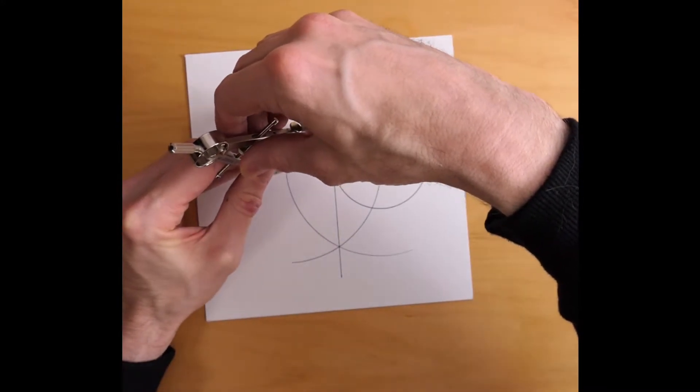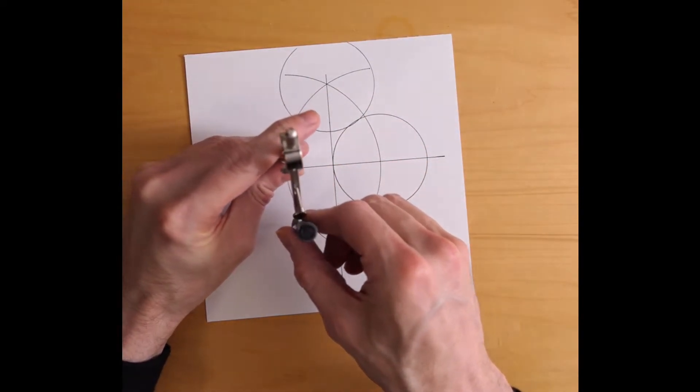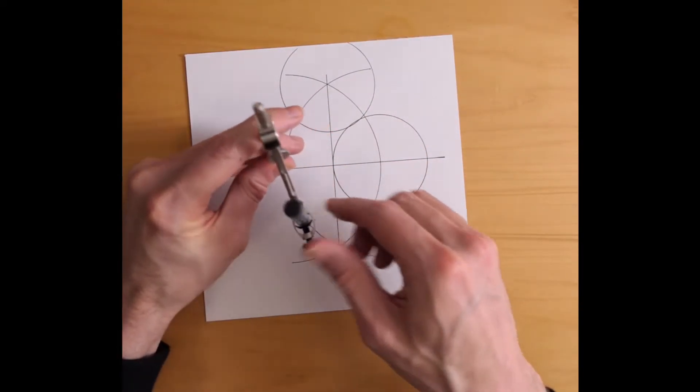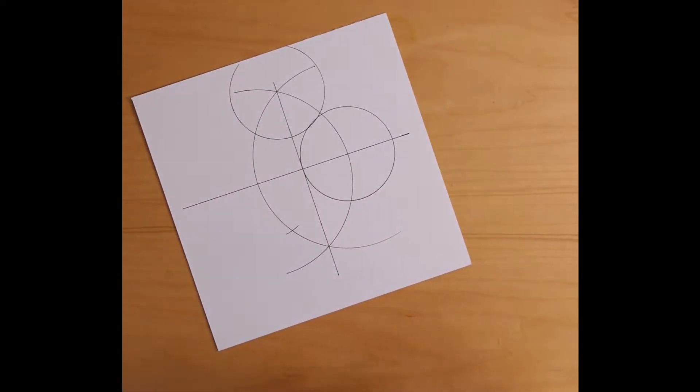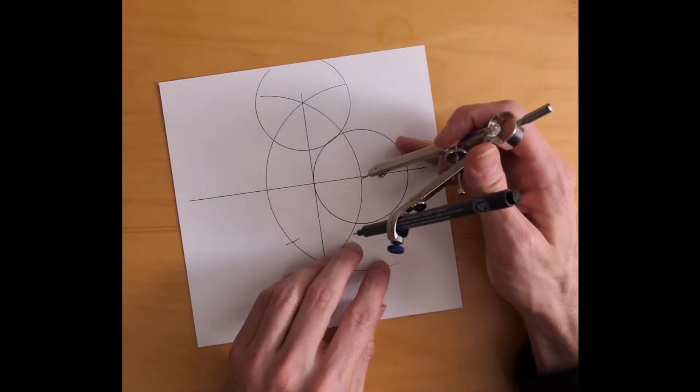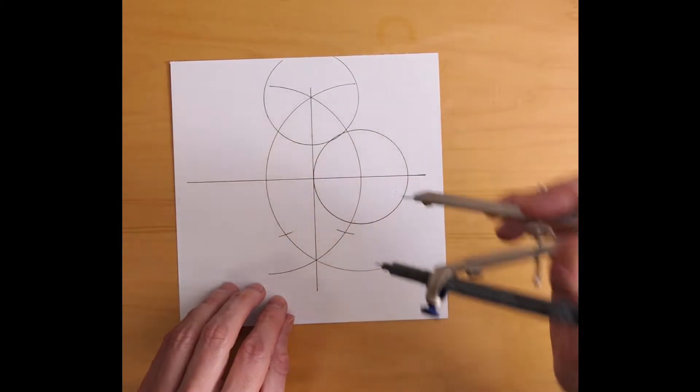So one side has to connect these two points, which means I can transfer that side length down here and figure out where the next corner of the pentagon has to be. And I can do the same thing over here with this intersection point. And now I have another point.